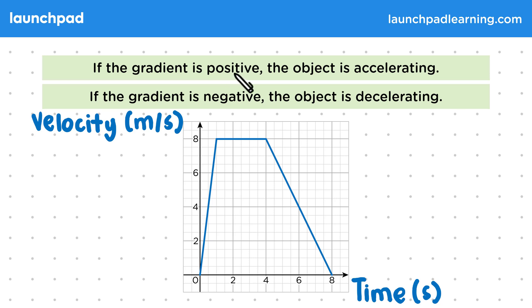Remember that a positive gradient is when the y values increase from left to right, like this first section here. We start at zero, which is where the object will actually be stationary, and then the velocity increases to eight metres per second. This means that the bird was accelerating from rest during this section.